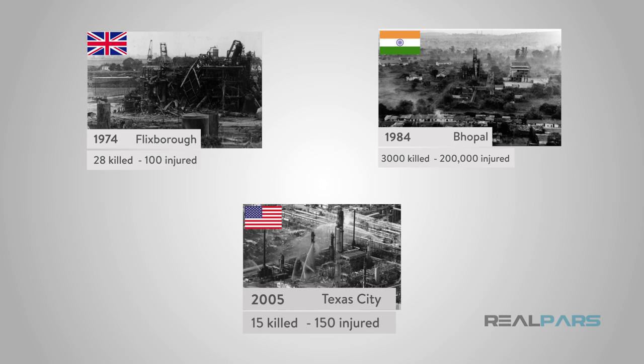But these first three layers of protection do not reduce a hazardous plant's risk to a tolerable level. The risks associated with production at Flicksboro were not all well-defined, and the proper controls were not in place to minimize those risks. At Bhopal, systems were in place to prevent the resulting gas leak, but did not take into account the scenario that led to the accident. In Texas City, several technical and operational shortcomings led to an explosion.